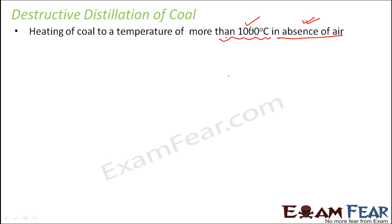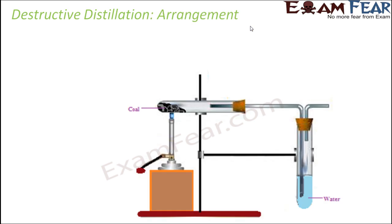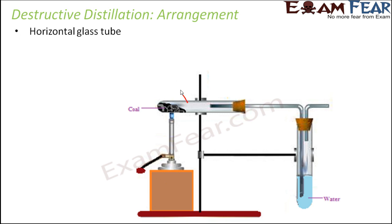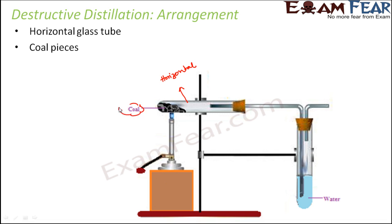Now what happens when we start heating coal to such a high temperature in absence of air? Let's look at the entire apparatus. For this purpose we need a horizontal glass tube, as you can see here. We also need some coal pieces — these are the coal pieces — which we are going to heat.